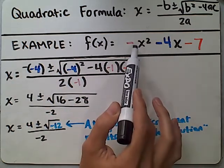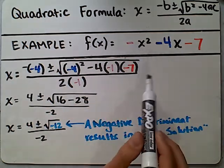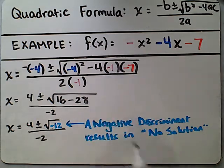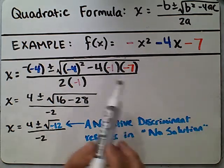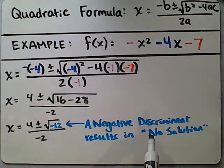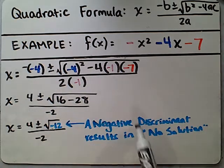In our function we've got an a value of negative 1. Anytime you see a negative x squared, that's really a negative 1. That negative 1 can go here. We've got negative 4 as the b value. Again, that's going to go here and here. And the c value is negative 7. That'll go there.